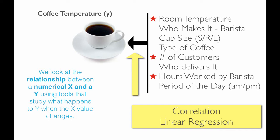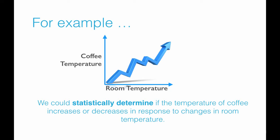We can also look at the relationship between a numerical X and a Y using tools that study what happens to Y when the X value changes. This is a different type of analysis. We would use correlation and linear regression type tools, which study the relationship between room temperature and coffee temperature, or between hours worked by the barista and the corresponding coffee temperature. An example would be statistically determining if the temperature of coffee increases or decreases in response to changes in room temperature — looking at the correlation between variables, and whether if one goes up, the other goes up or down in a corresponding response.